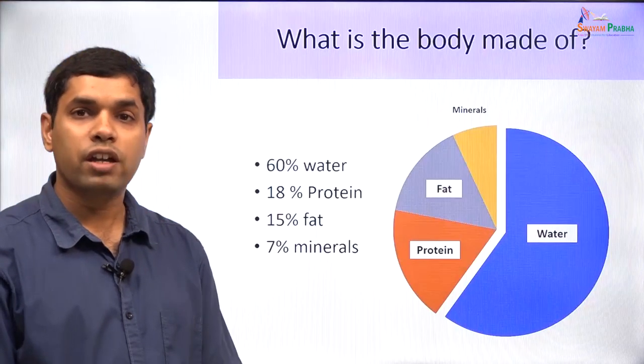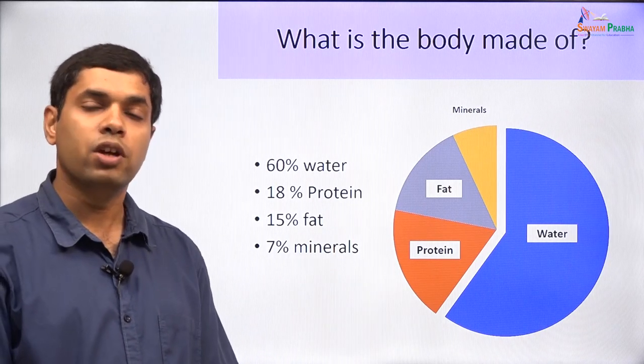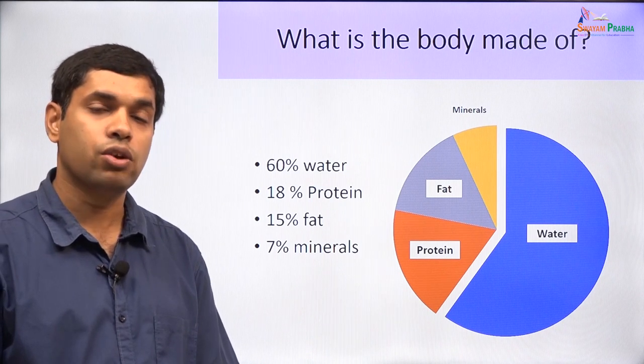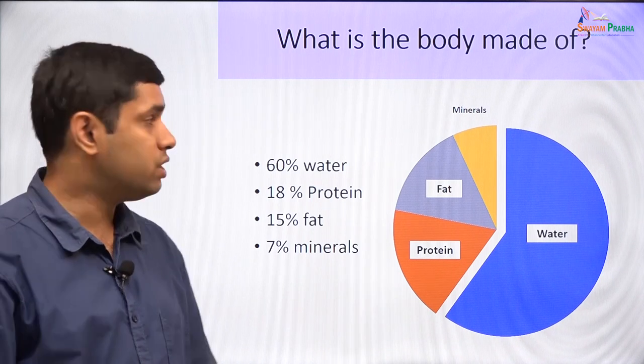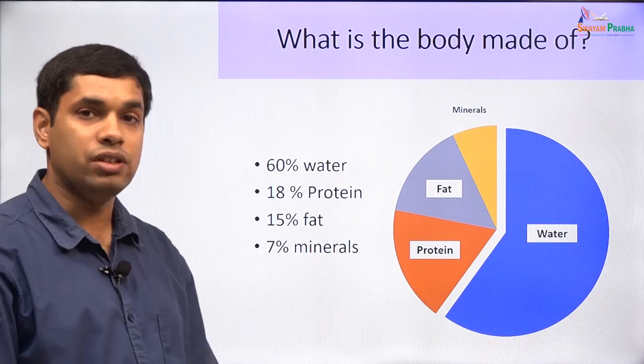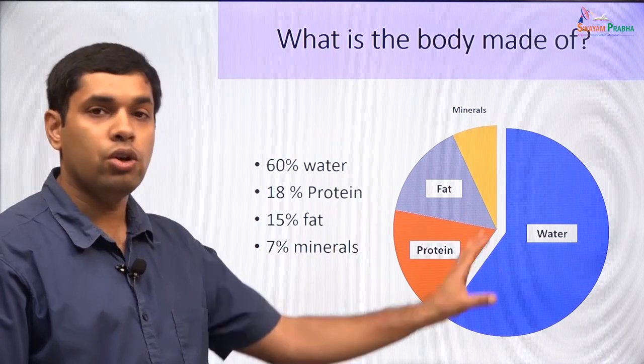We know that the earth is covered by around 71% of water, so a large majority of the earth is actually covered by water and land occupies only a minimal percentage of the earth's surface. A similar comparison can be made for our body: the human body is about 60% water, or 60% of the weight of our bodies is water, and the remaining material like proteins, fats, and minerals occupy only about 40% of body weight.